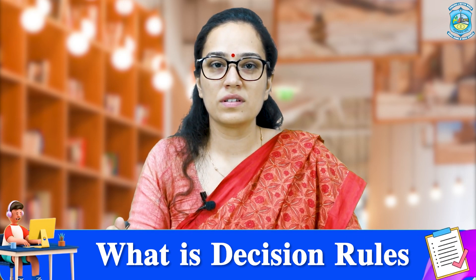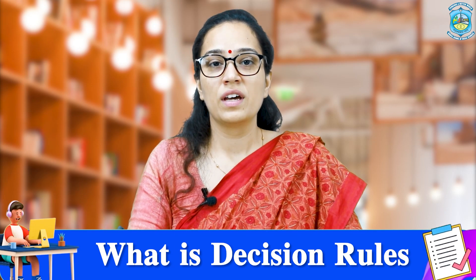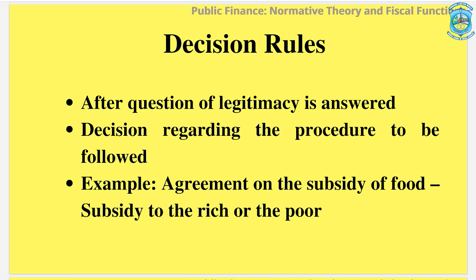Once you have answered the legitimacy question, the next question arises of decision rules. It asks what should be the process through which the choices made under the legitimacy question are going to be materialized. For example, if government chose subsidizing food, there are many decision rules that need to be answered — to what extent should subsidy be given, to whom should it be given, should it be the rich first or the poor first, or in terms of geographical location, which geography should be prioritized.